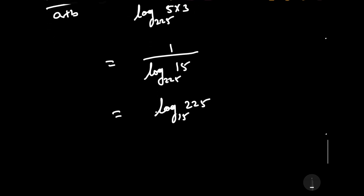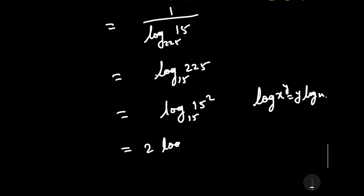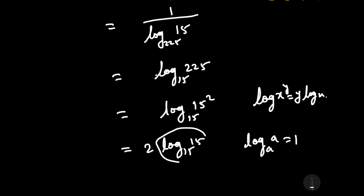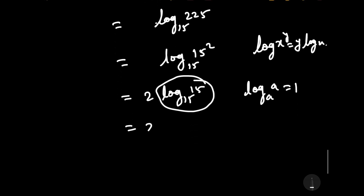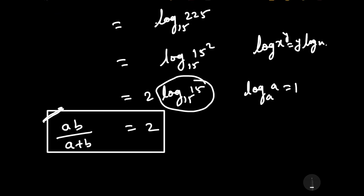This equals log base 15 of 225. Since 225 is the square of 15, we write this as log base 15 of 15 squared. Using the property log x to the power y equals y log x, this becomes 2 log base 15 of 15. Since log base a of a equals 1, this gives us 2. Therefore AB by A plus B is equal to 2, and this is our required answer.